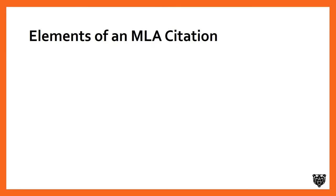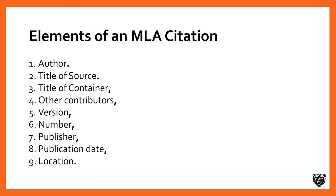So what are the elements of an MLA citation? There are nine and they're pretty straightforward: author, title of source, title of container — which we'll talk about in detail — other contributors, version, number, publisher, publication date, and location.